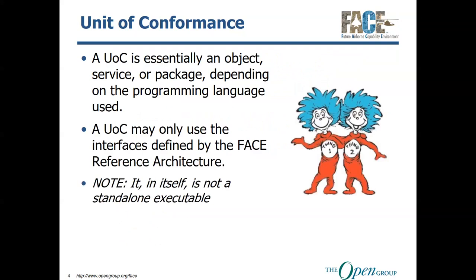A UOC is essentially, depending on the programming language you use and its state, an object, a service, or a package. In object-oriented languages it's going to be an object; in more procedural languages like C, it's typically a service. It can be a package consisting of several services, and it can actually be deployed as a UOC package in which multiple capabilities are deployed with it. A UOC may only use the interfaces defined by the FACE reference architecture — for data movement, the TS interface; for input-output, the I/O service; and for OS-specific methods and functions, the OSS APIs.